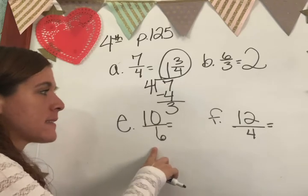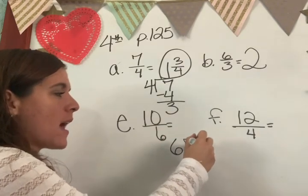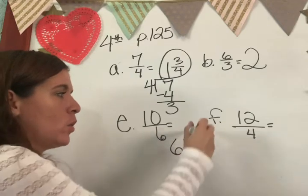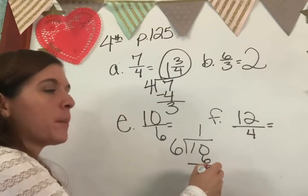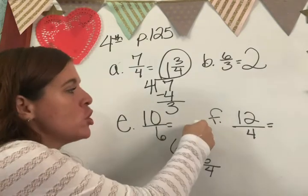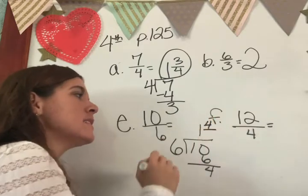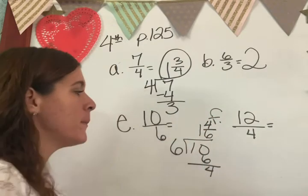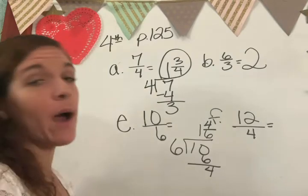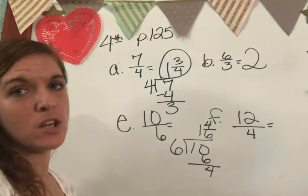Here we go. Ten divided by six. Let's do it together. Six into ten, how many times, Fernanda? One. One times six is six. Four. What am I going to put as a numerator, Kiana? Four. And what am I going to put as a denominator, Jayla? Six. Now what? Can you leave it like that? No.